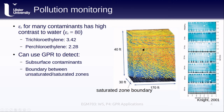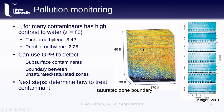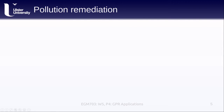We can also use GPR to detect the boundary between the unsaturated and saturated zones — in other words, the start of the water table. Once we've mapped the contaminant, we can work on determining how best to treat it, either by excavating and removing it or by working to contain it. By comparing GPR surveys over time, it is also possible to monitor how contamination levels are changing.